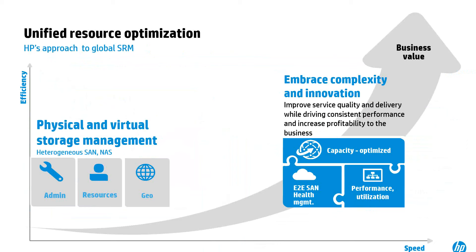SOM helps you solve two of the main use cases for storage resource management: capacity and performance optimization. In capacity optimization, we identify sources of unused storage capacity. As Vikram will show in the demo, we can show you how to reclaim storage allocated to hosts but never used, and repurpose it — delaying spending on additional storage hardware. In performance management, we can pinpoint areas of degraded performance within your infrastructure and then optimize the performance of your SAN.